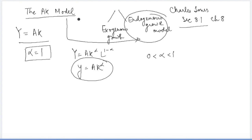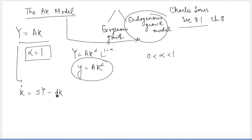Just as we have discussed capital growth dynamics in all the models, similarly in the AK model we can build the same thing: what is the change in capital over a period of time? The capital accumulation equation is a simple one from the Solow model — it is the total amount of investment in the economy minus the amount of depreciation. So it is: K-dot equals sY minus dK, where s is the savings rate, Y is total output, d is the depreciation rate, and K is the amount of capital.